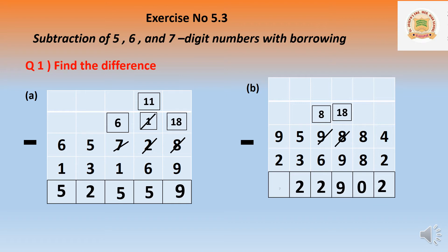Lakhs place: 9 minus 2 equals 7. So the answer is seven lakh twenty-two thousand nine hundred and two.